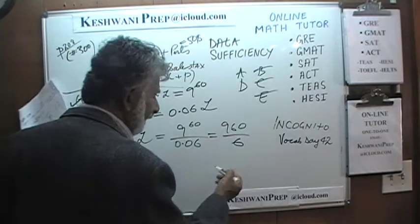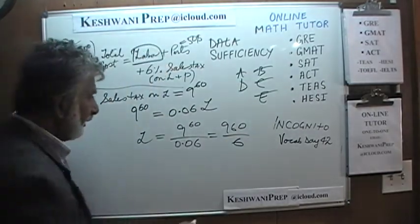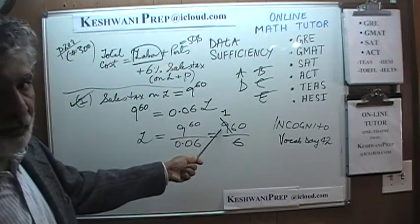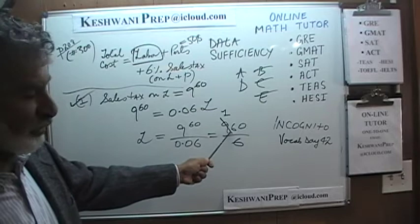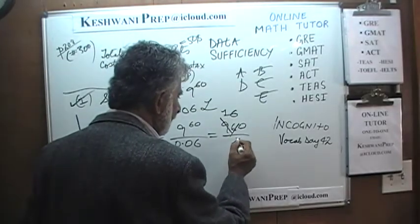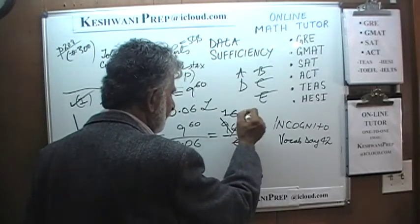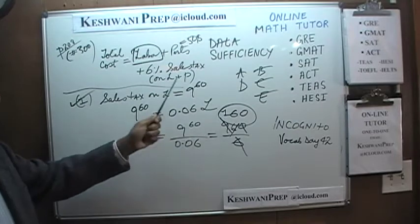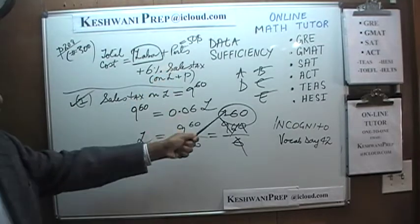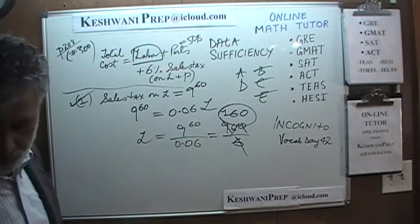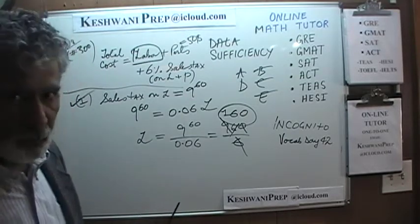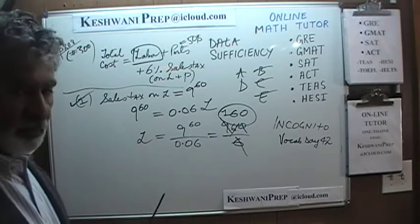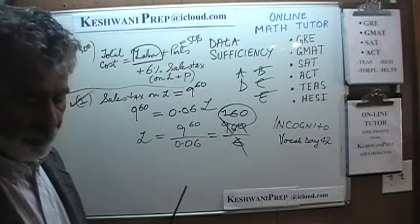Working it out: 960 over 6 gives labor of $160. Labor $160 plus parts $50 equals $210, plus 6% of $210 gives the total cost. We didn't actually have to figure it all the way out — this is data sufficiency, not data calculation. We simply have to establish that we have sufficient data, and we do.